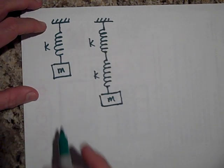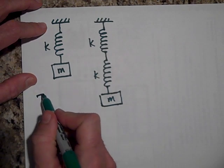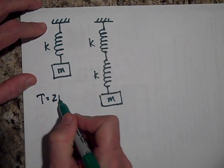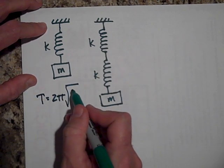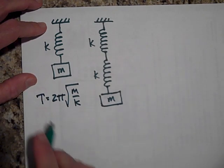Okay. So let's see. The period of this is going to be the one on the left is going to be equal to two pi times the square root of M over K. That's this one.